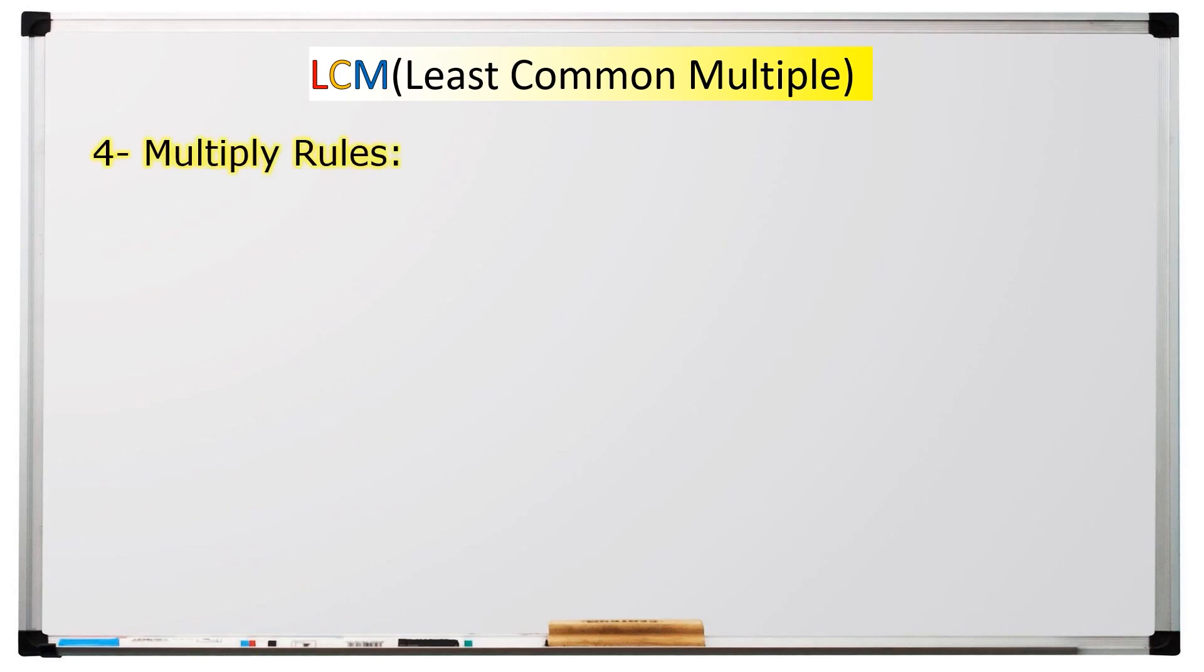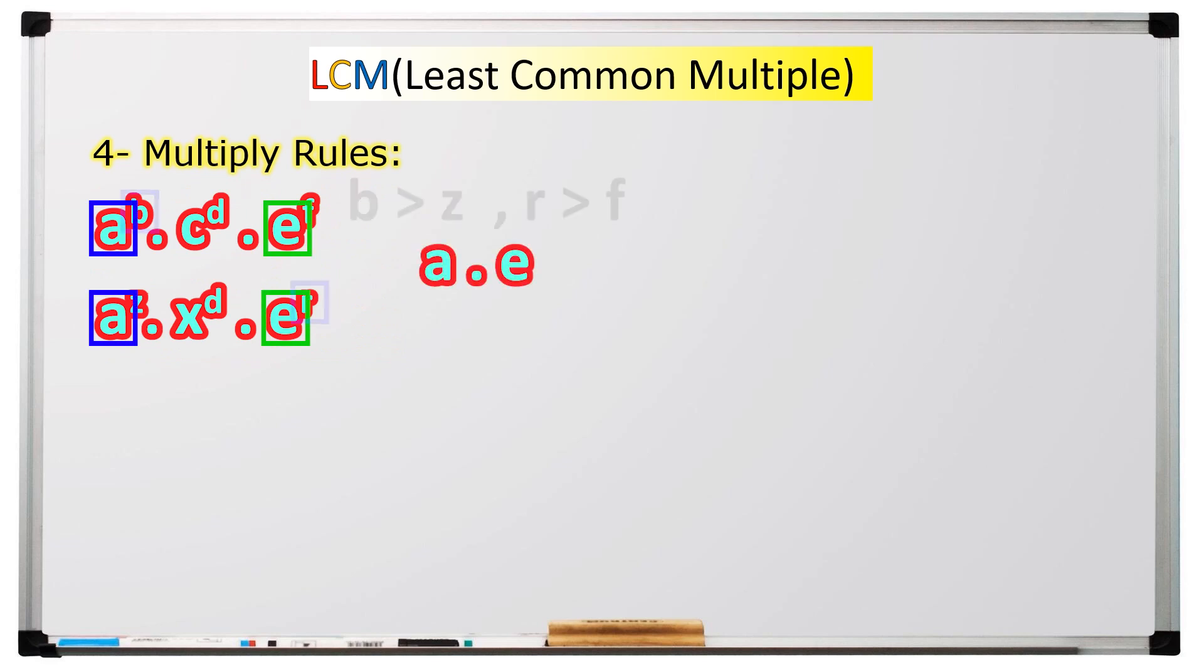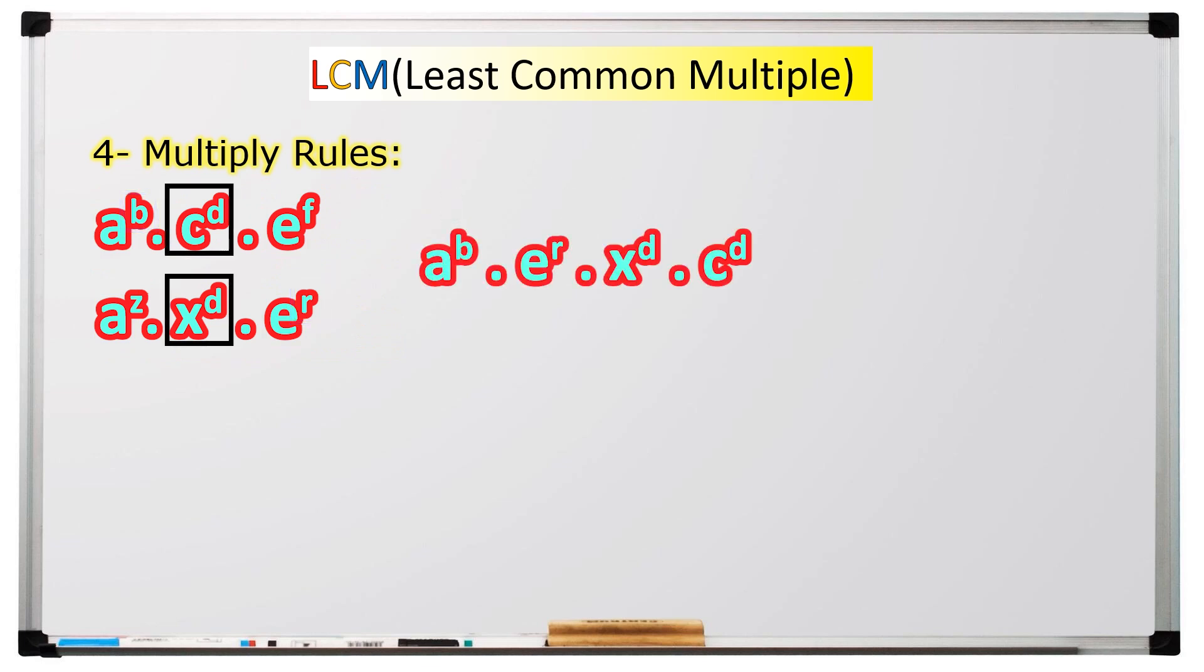The last but not least step is the multiplication rule. In this step, we should consider all the previous steps at once. First, choose the common prime factors for two or more numbers, then select the largest exponent from each number. Second, pick all the uncommon factors. Finally, multiply them together.